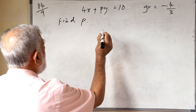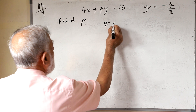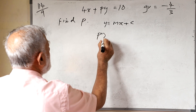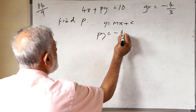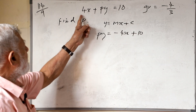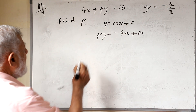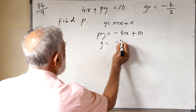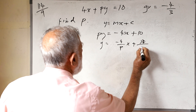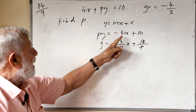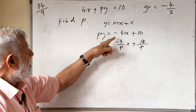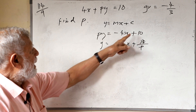First, you convert the equation immediately into the form y = mx + c. So p·y = -4x + 10. Dividing each term by p, we get y = (-4/p)x + (10/p).